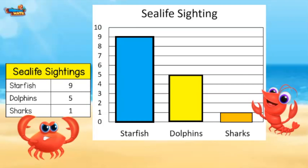What sea life did we see the most of? If you said starfish, you are correct. Starfish have the highest bar. What did we see the least of? Sharks — thank goodness.